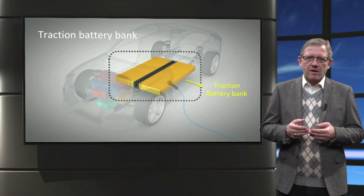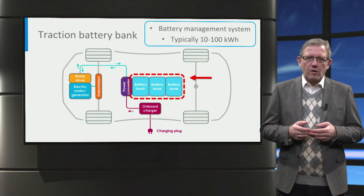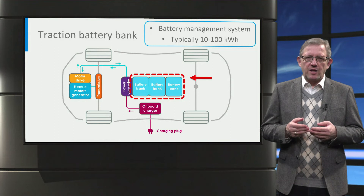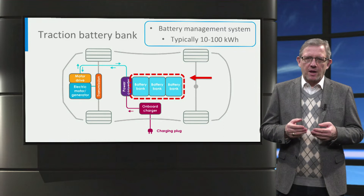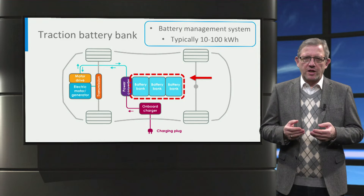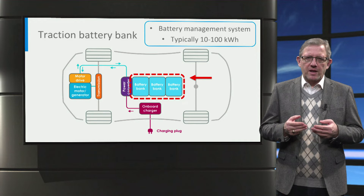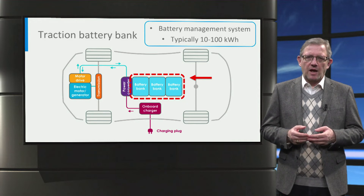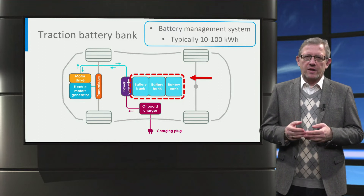Next is the high-voltage traction battery, which is the heart of any electric vehicle. Generally the battery is located at the bottom of the car, but this can vary depending on the manufacturer. The role of the battery is to store energy for the propulsion of the vehicle. The battery has a battery management system that monitors and regulates the battery charging characteristics such as voltage, current, temperature and state of charge. The energy content of a battery is normally expressed in kilowatt-hours, and nowadays electric cars have battery sizes in the range of 10 to 100 kilowatt-hours.